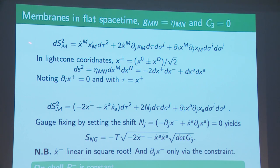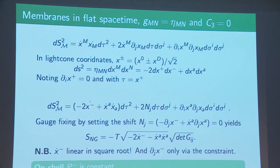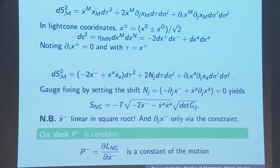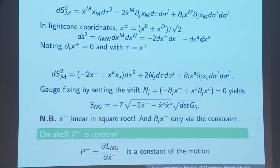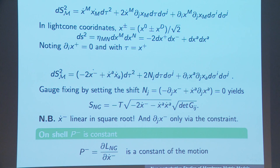One writes down, taking the flat space membrane embedding and pulling back the membrane metric, where the sigmas are coordinates on the membrane. If I choose light-cone coordinates and choose the time parameter tau to be x+, then what's special is that x-dot only appears linearly here, and the fact that it's linear rather than quadratic plays a crucial role. Choosing the shift gauge fixing so that the shift N^j is zero — this is an additional gauge-fixing constraint — the Nambu-Goto form takes the form of the product of two terms.